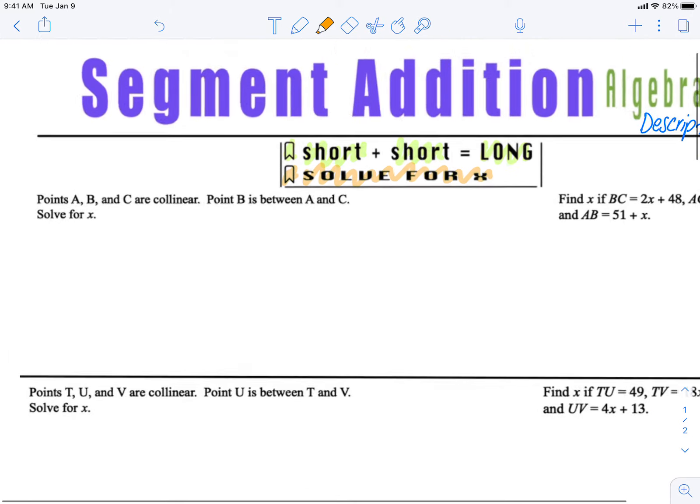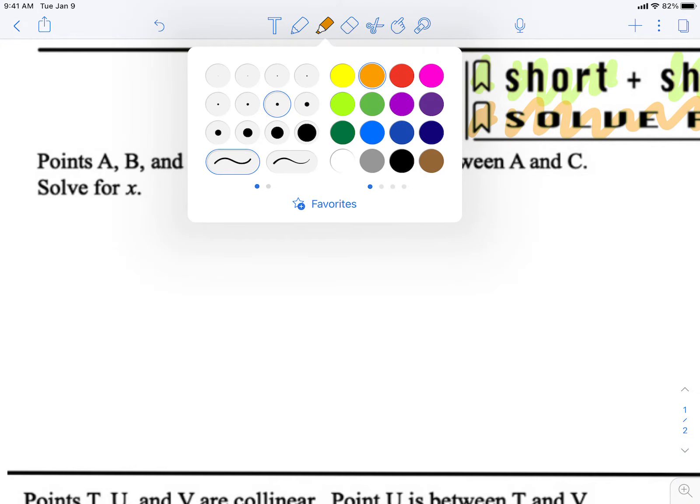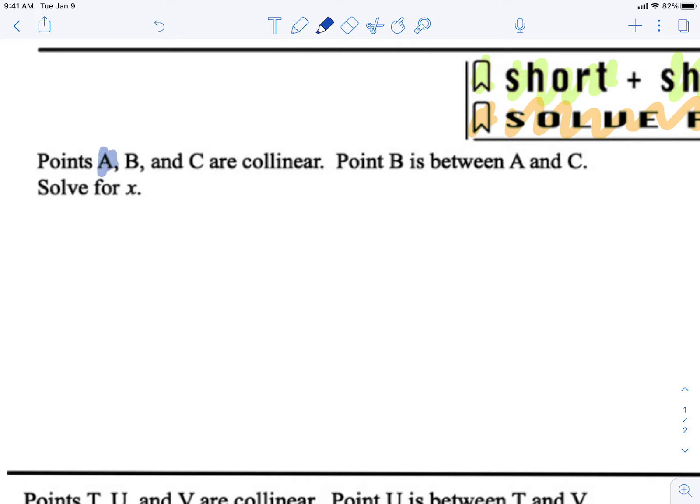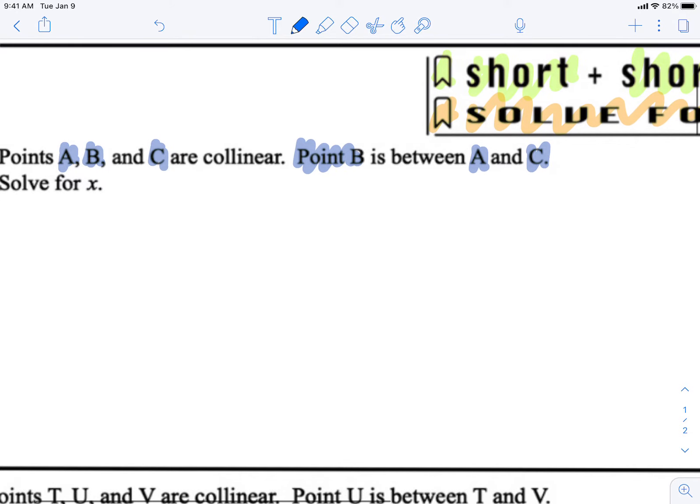Let's look at our first example here. It says points A, B, and C are collinear. Point B is between A and C, or it is on segment AC. So when we write that out, point B is on segment AC. This is our long segment AC, and B is on that segment.